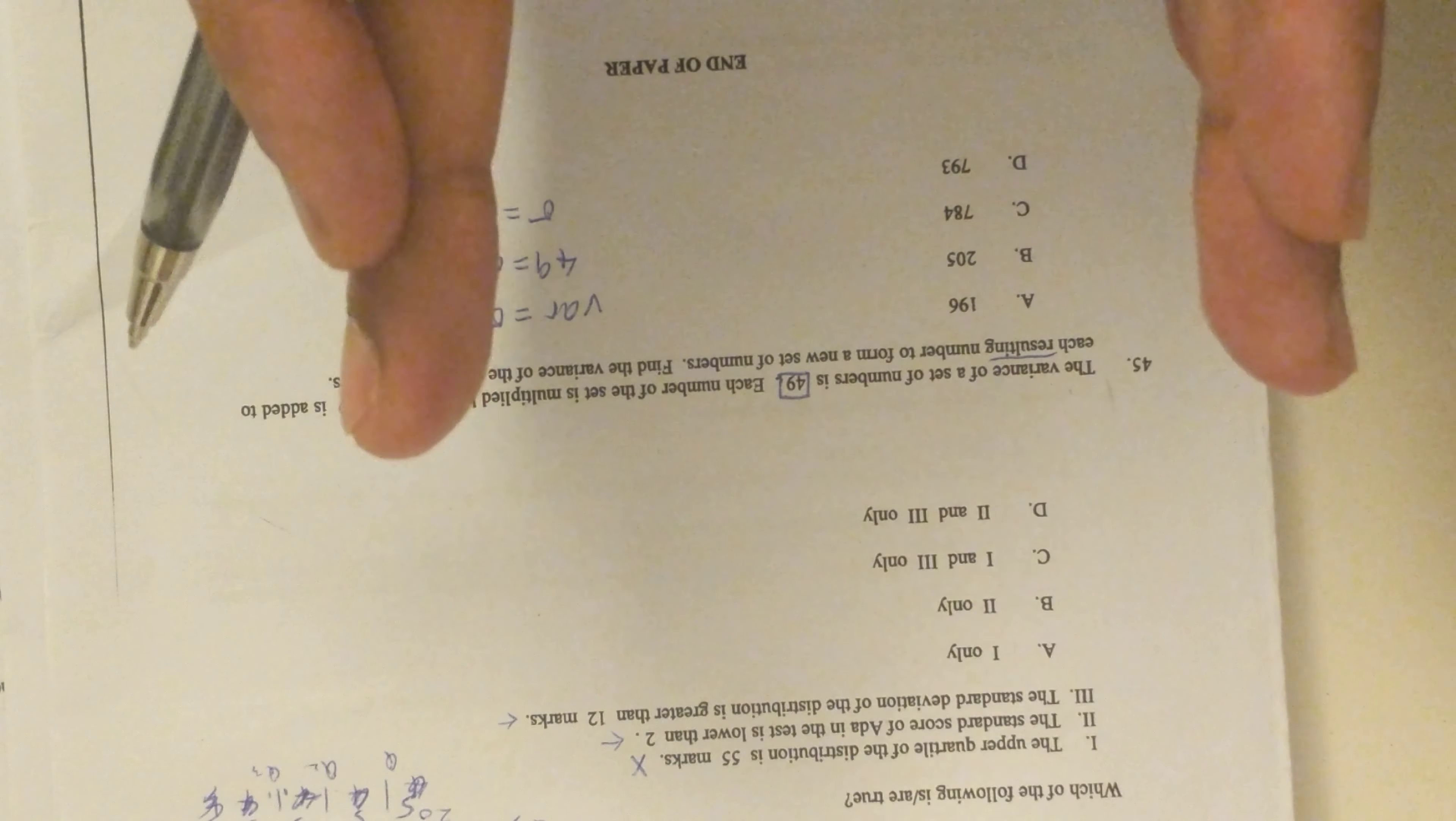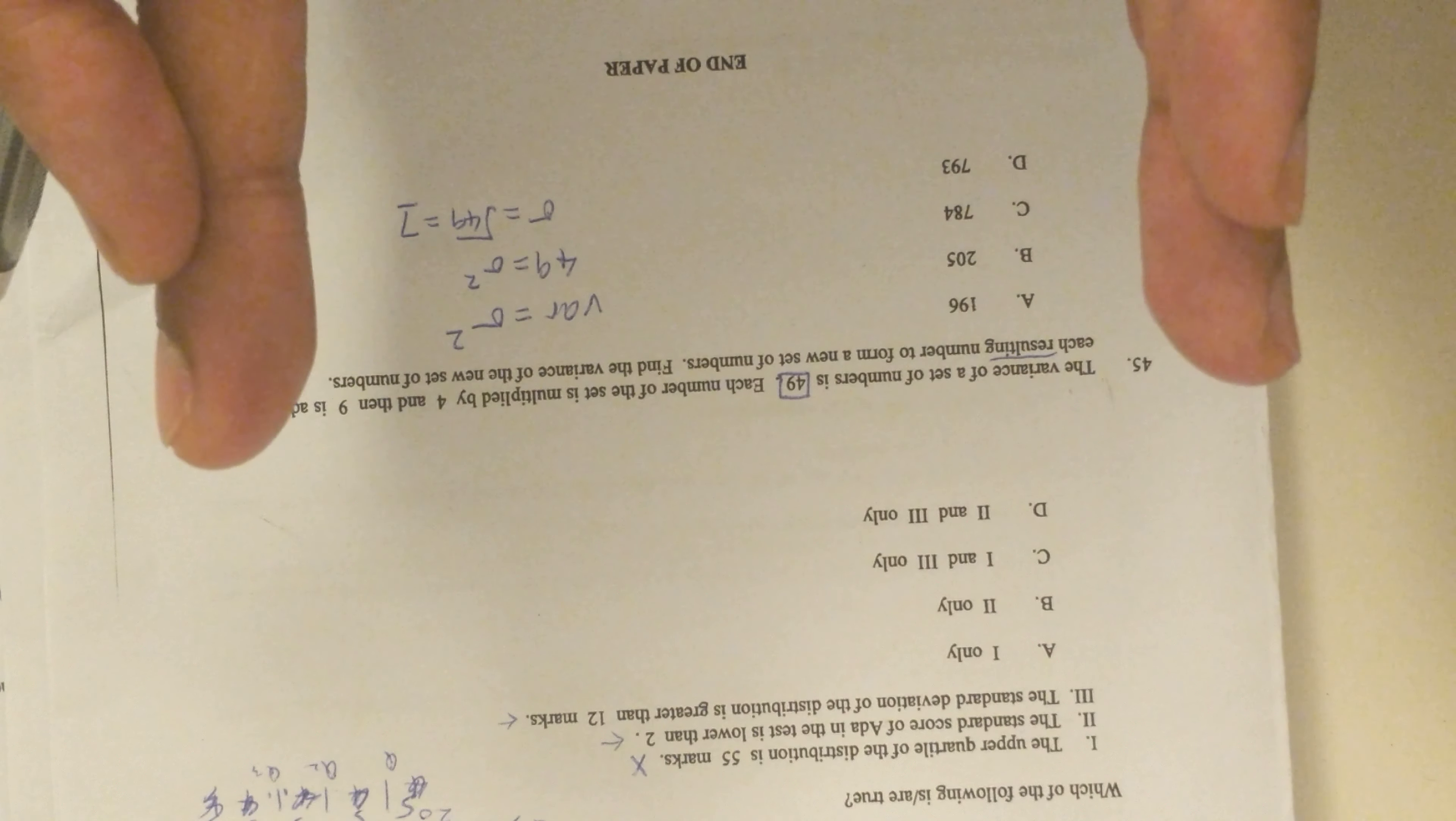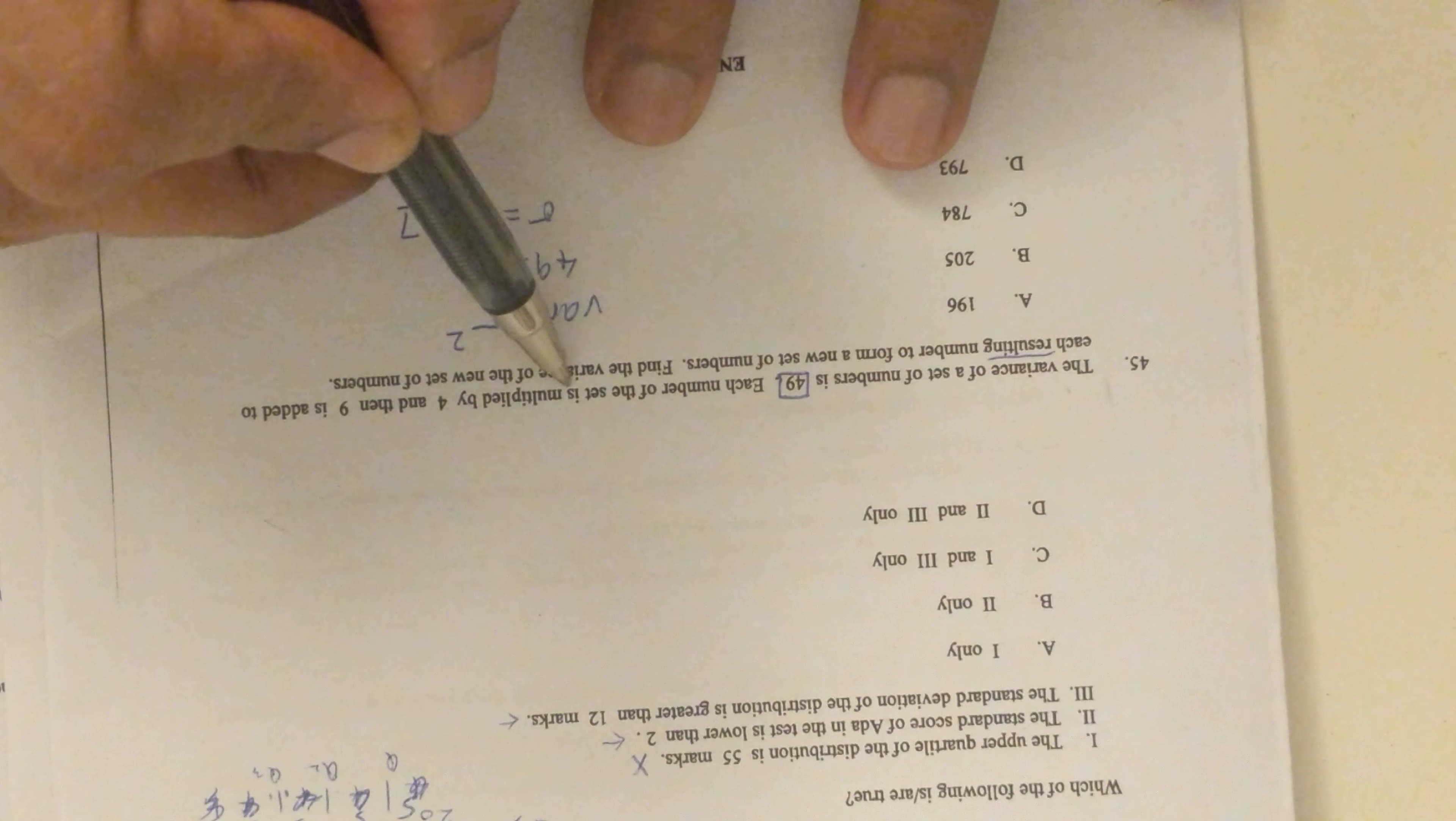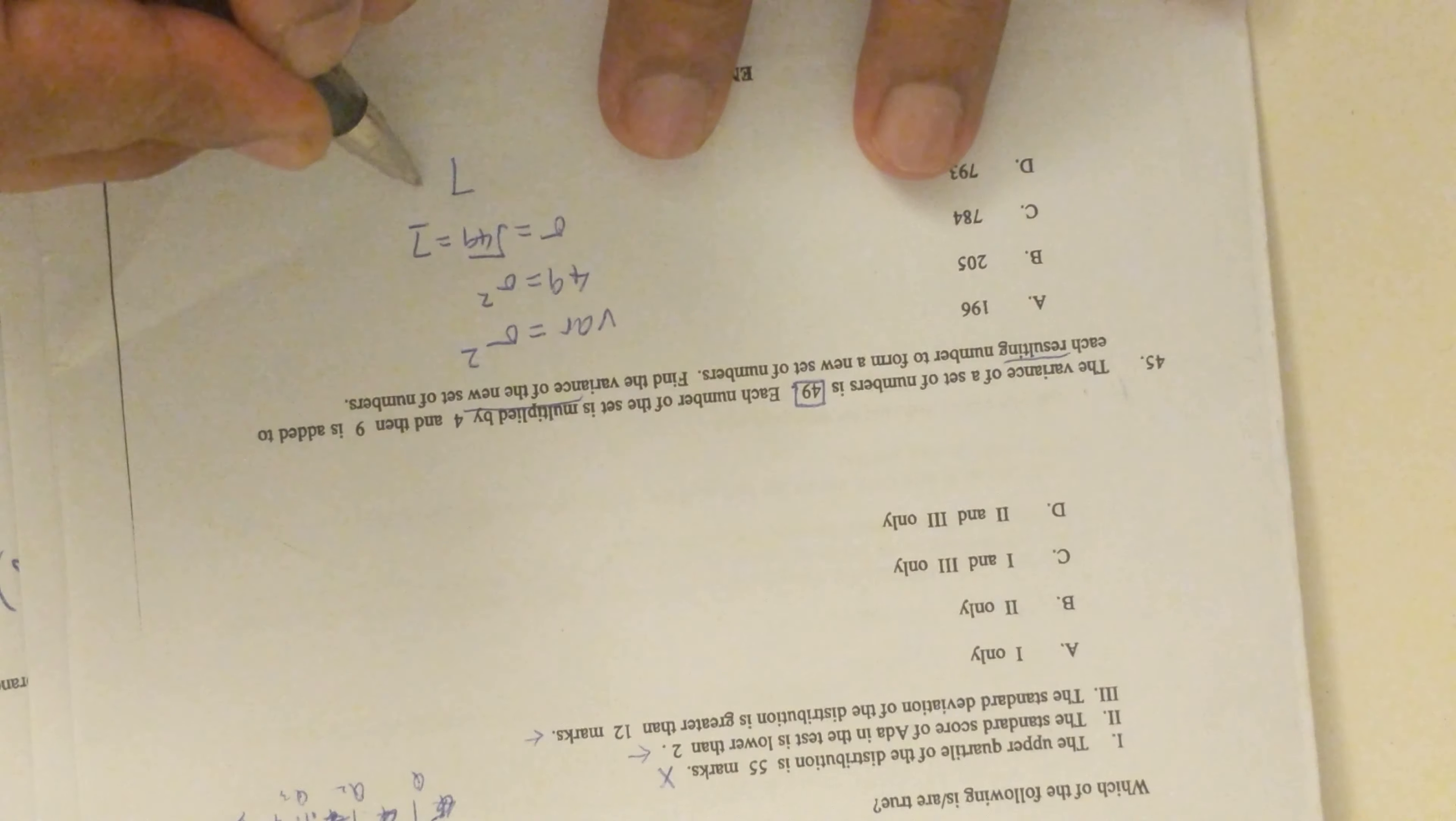SD will not change just by adding something. However, if you multiply or divide something, then it will make it smaller or larger. If you multiply something you will make it larger. They said they multiplied by 4, so actually the SD will also multiply by 4. From the old SD being 7, it will multiply by 4 to get you 28.